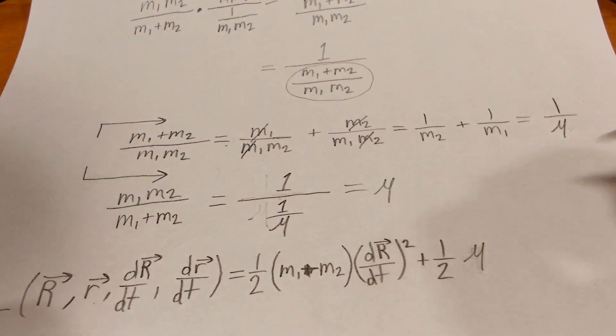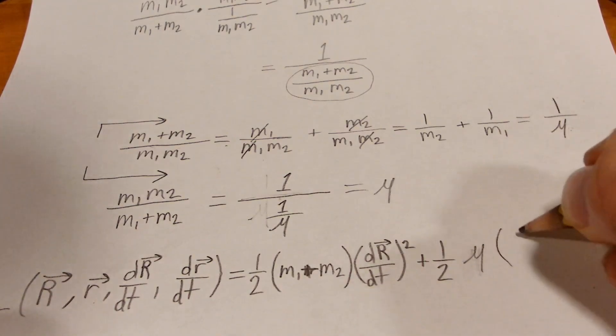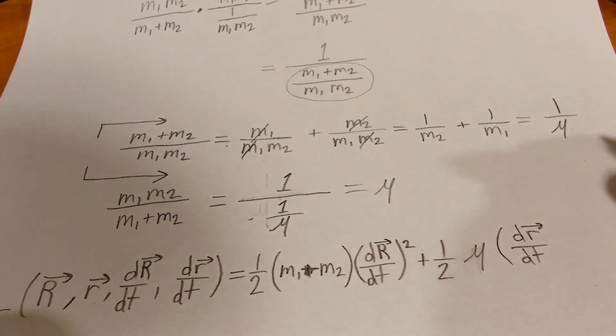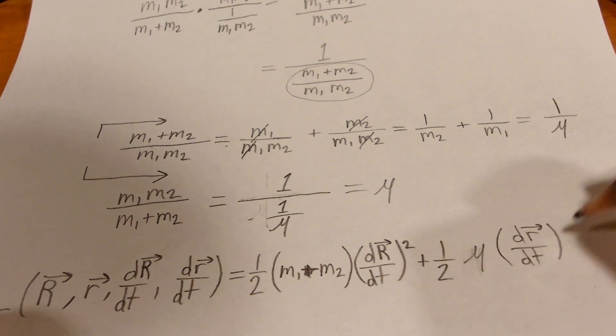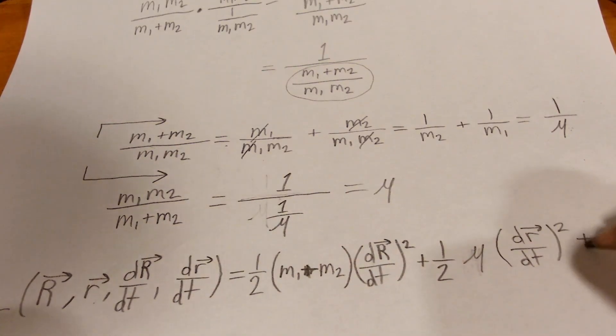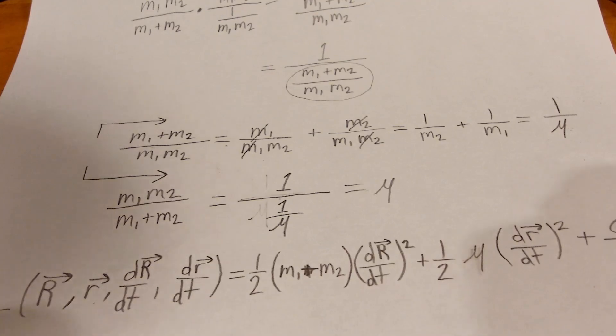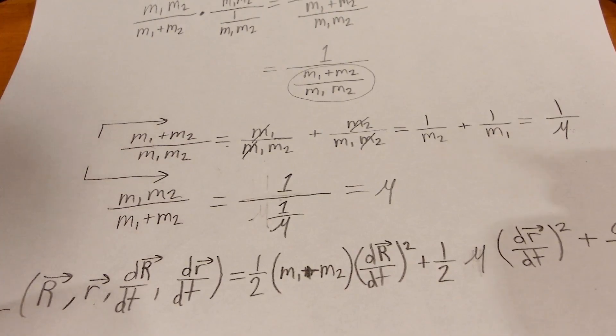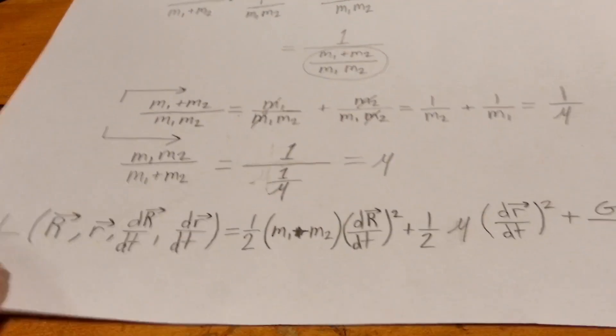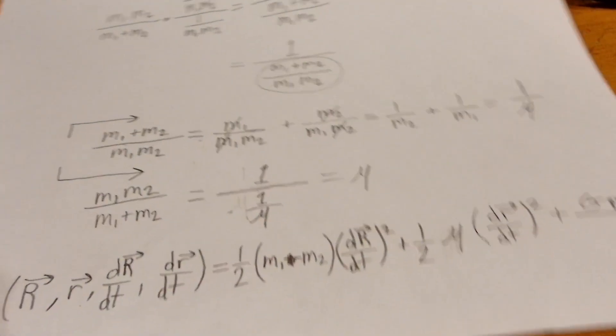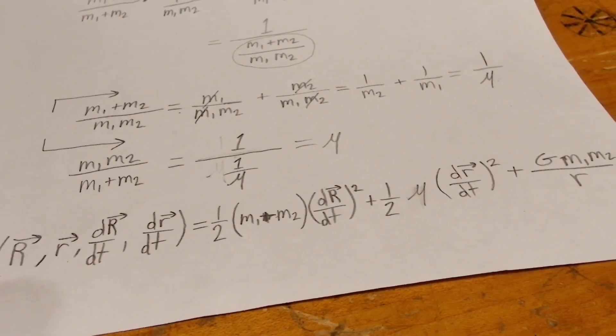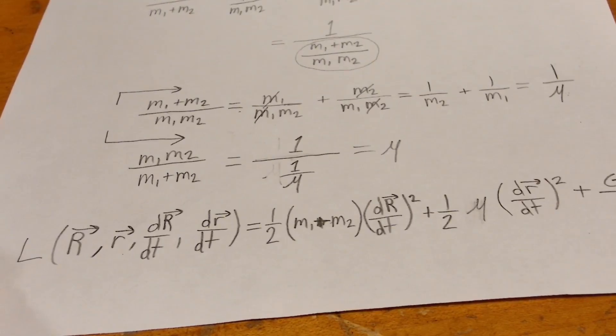Making that become mu times dr squared and then plus the gravitational potential energy. And so there you go. Thank you.